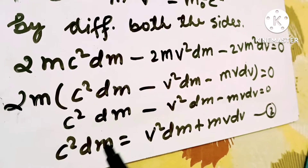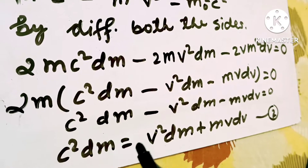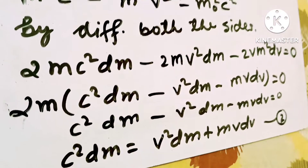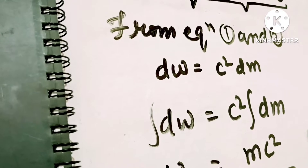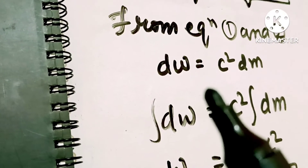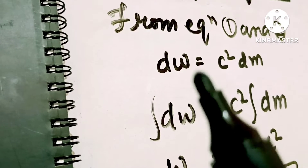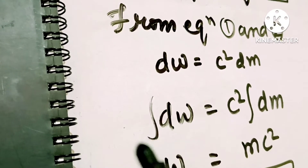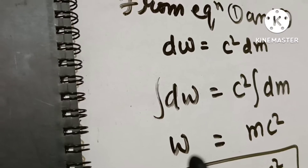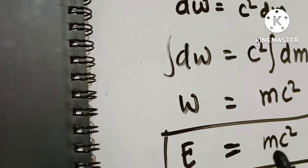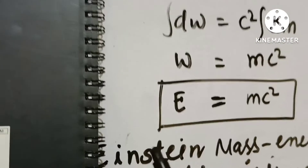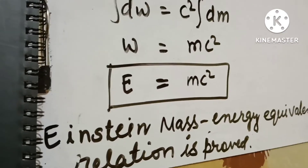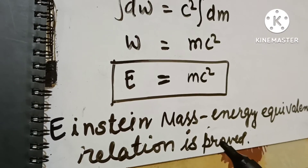Rearranging, c²·dm is equal to v²·dm plus mv·dv. This is equation 2. From equations 1 and 2, dw is equal to c²·dm. Integrating both sides, we get E is equal to mc². This is Einstein's mass-energy equivalence relation, and it is proved.